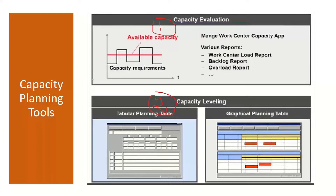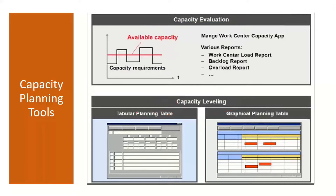Capacity evaluation means you compare your available capacity with your capacity requirement. Wherever there is an overload or underload, you do the leveling to make capacity loads uniform. For leveling you have two tools: the tabular planning table and the graphical planning table.